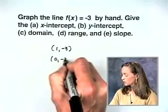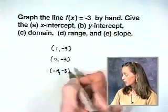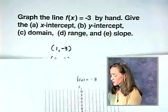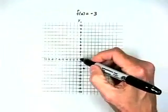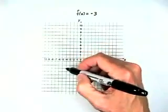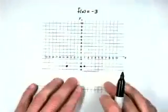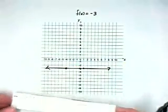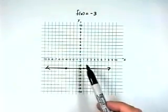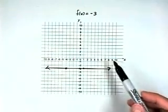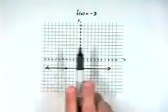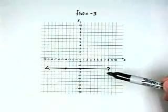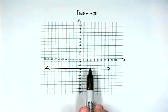Three ordered pairs might be anything with negative 3 as the y coordinate. We'll use 1, negative 3; then 0, negative 3; and negative 4, negative 3. These x's are chosen arbitrarily. Plotting these gives us the graph of the horizontal line. The x intercept does not exist — it never touches the x axis. The y intercept is negative 3. The domain is all real numbers. The range is specifically only the number negative 3. The slope of the line is 0.